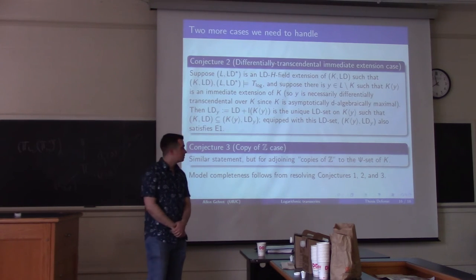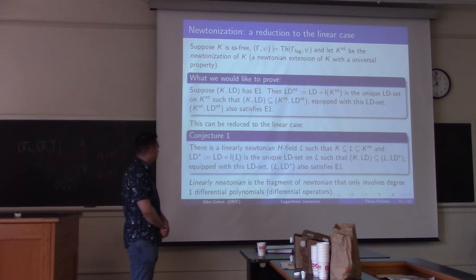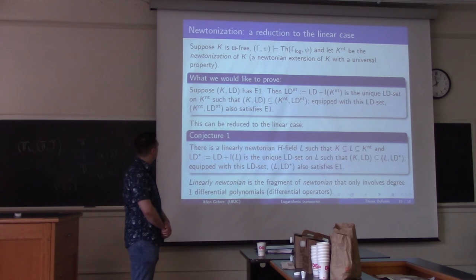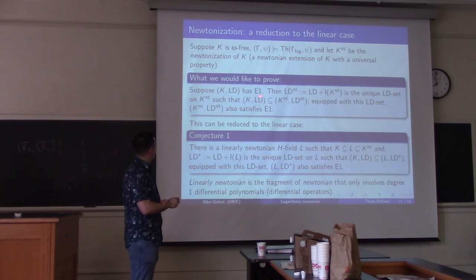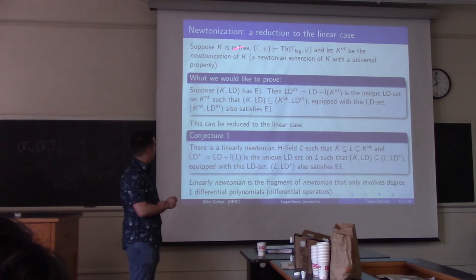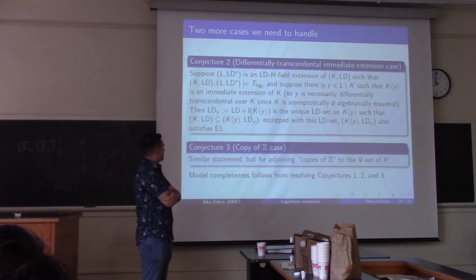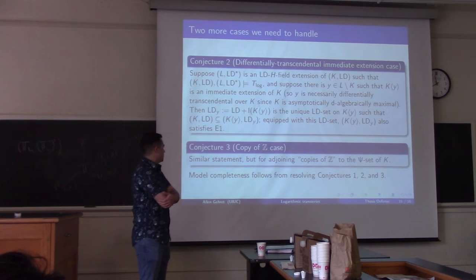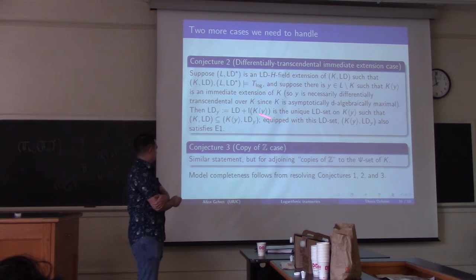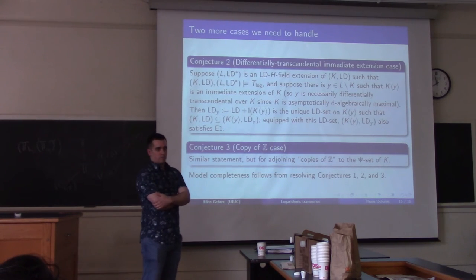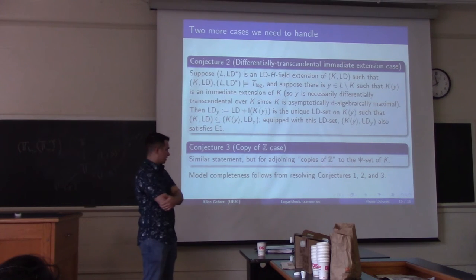Questions from the committee follow. Regarding the approach to proving Conjecture 1: in the thesis there's the order-one version — one-linear Newtonian with a single derivative — which I'm able to handle in the special case where the C-set is just the naturals. Perhaps looking at the case where the C-set might have finitely many copies of Z as well. Lou mentions ideas about reducing the general linear case to order one — if you're algebraically closed and can factor, a linear differential operator factors into order-one factors, so one could hope to reduce Conjecture 1 to the order-one case. The hope would be: if you're one-linear Newtonian and some other conditions hold, to get full linear Newtonian you just have to consider special pseudoconvergent sequences.